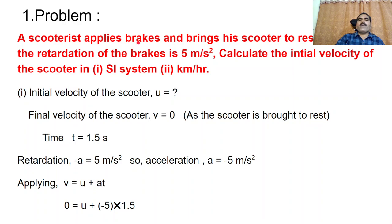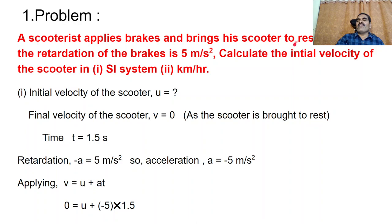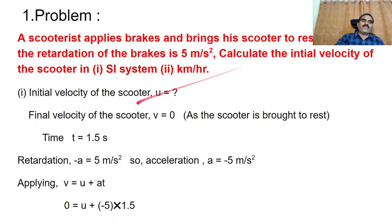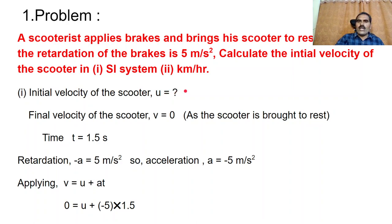A scooterist applies the brakes, meaning the scooter is moving and he applies brakes so that it comes to rest — meaning the final velocity becomes 0. We do not know the initial velocity, how much speed the scooter had before it came to rest. So initial velocity U is what we have to calculate. Final velocity V equals 0.